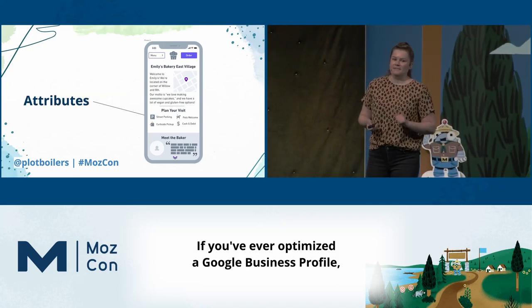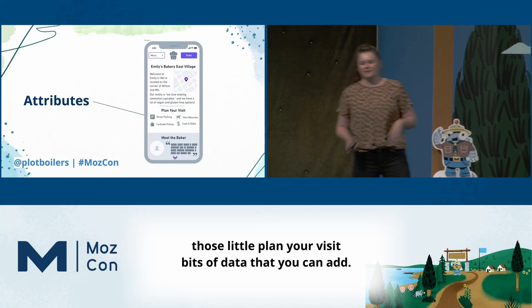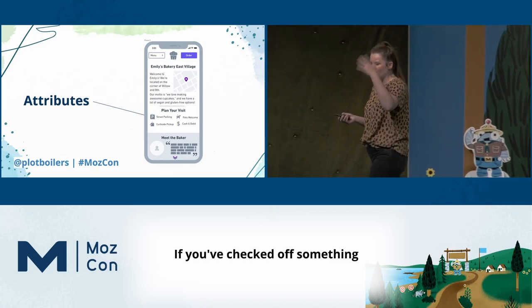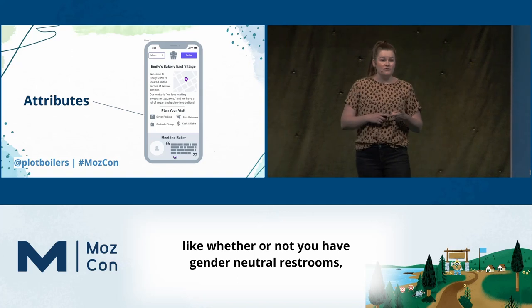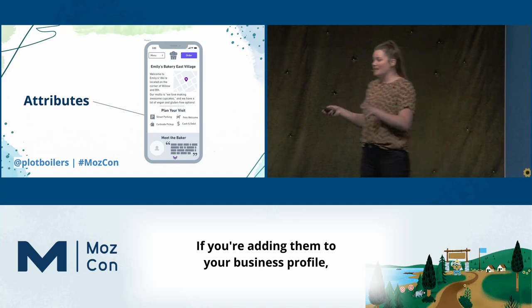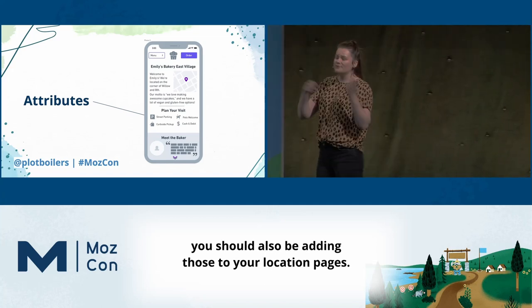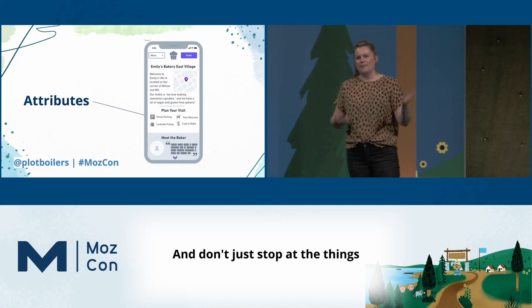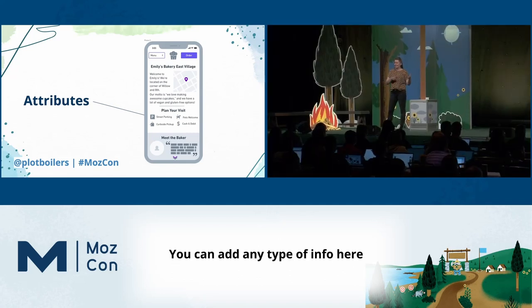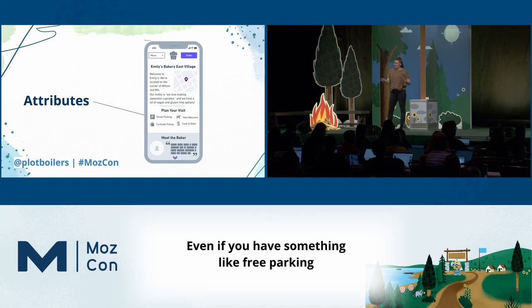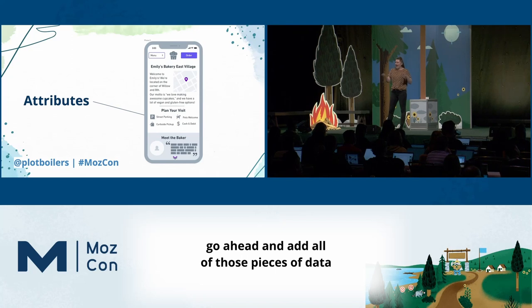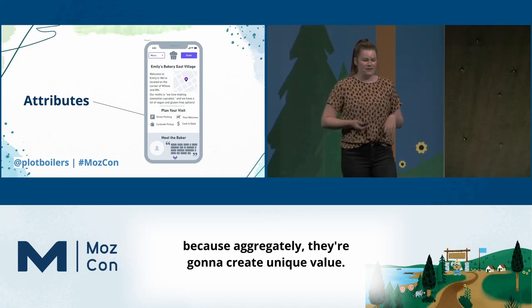If you've ever optimized a Google Business Profile, you know what attributes are — those little 'plan your visit' bits of data you can add, like whether you have gender-neutral restrooms or the payment options you accept. If you're adding them to your business profile, you should also be adding them to your location pages. Don't just stop at what your Google Business Profile allows — you can add any type of relevant info here. Even if you have free parking at every single location, add all of those pieces of data because, aggregately, they're going to create unique value.